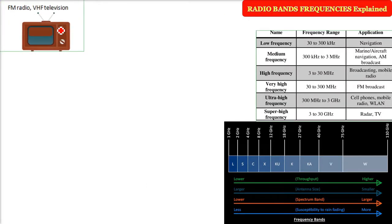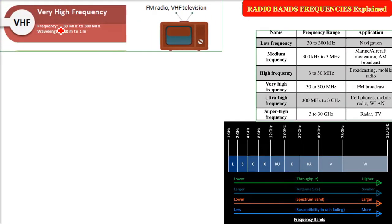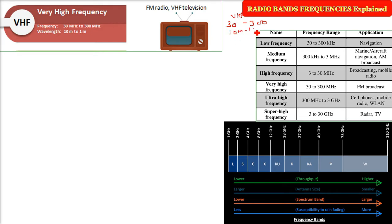Then we have the Very High Frequency (VHF), ranging from 30 megahertz to 300 megahertz. The wavelength of these electromagnetic waves will be 10 meters to 1 meter.